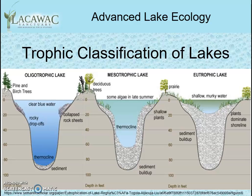Oligotrophic lakes have low nutrient concentrations, low biological growth, clear water, and dissolved oxygen throughout the water column. Eutrophic lakes have a high nutrient concentration and abundance of biological growth, especially algae and macrophytes. They have cloudy, turbid water and a depletion of dissolved oxygen in the hypolimnion, or the depths, during the summer months. Mesotrophic lakes are somewhere in between.